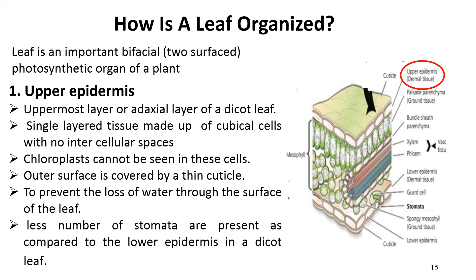On the upper epidermis, a fewer number of stomata are present when compared to the lower epidermis. In dicot leaves, the presence of fewer stomata on the upper surface is an adaptation to reduce the loss of water through transpiration.